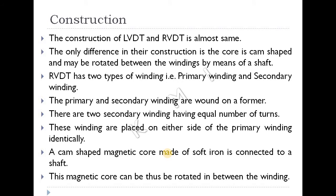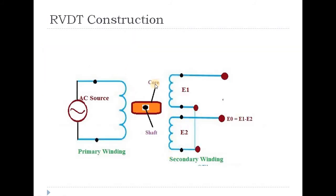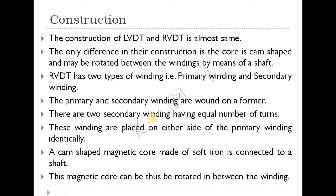The construction of LVDT and RVDT is almost the same. The only difference is the core is cam-shaped and may be rotated between the windings by means of a shaft. The shaft is rotated to produce angular displacement. There are primary and secondary windings wound on a former, and there are two secondary windings having an equal number of turns.